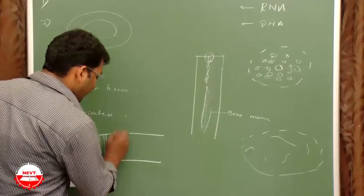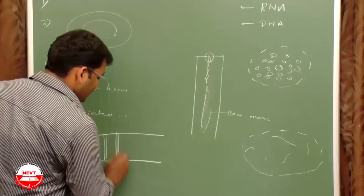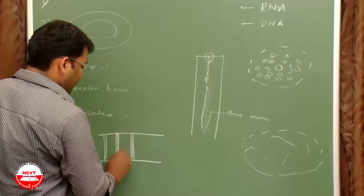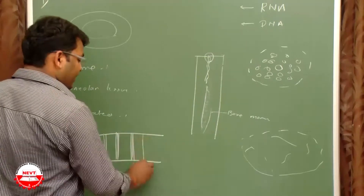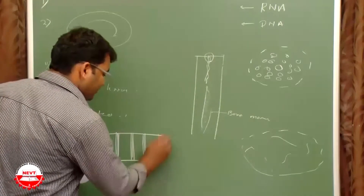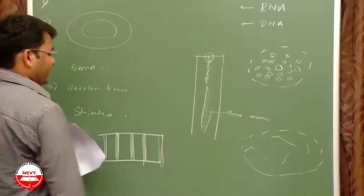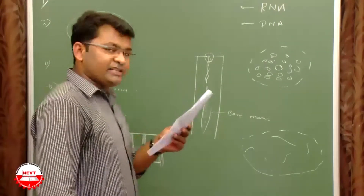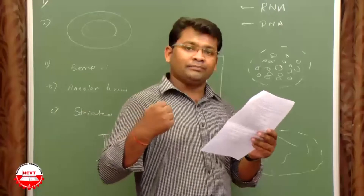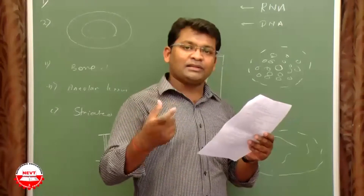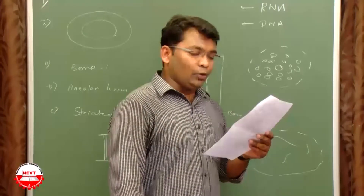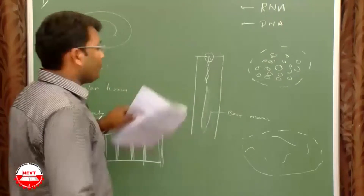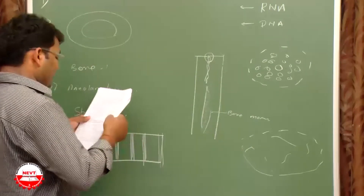Striated muscle has alternating dark and light bands. These muscles can contract voluntarily. Their location is around bones, helping in voluntary movements. In higher classes you will study more about the different zones (Z-bands etc.) of striated muscle.